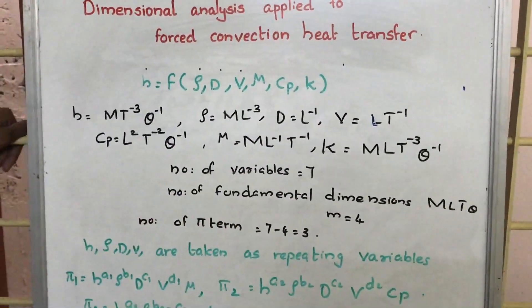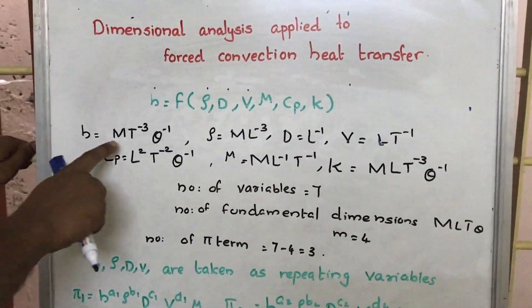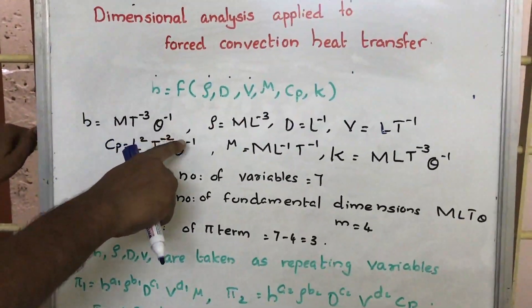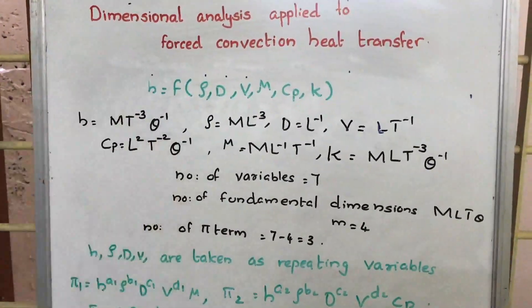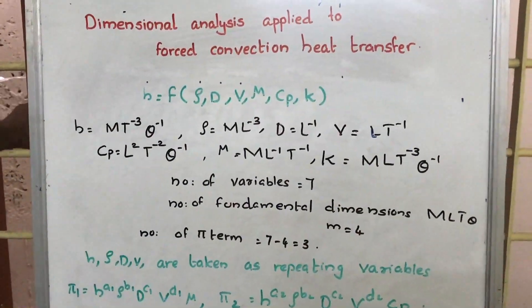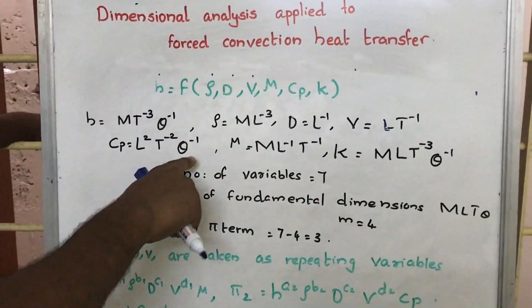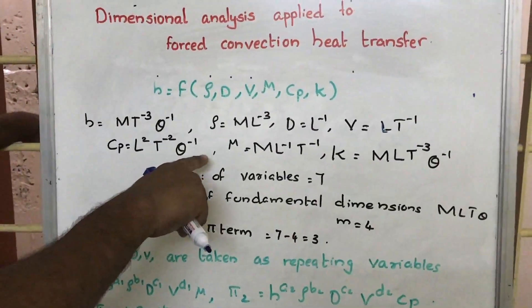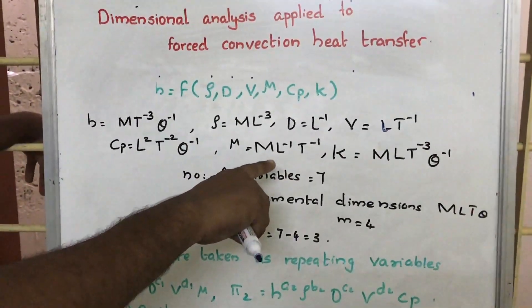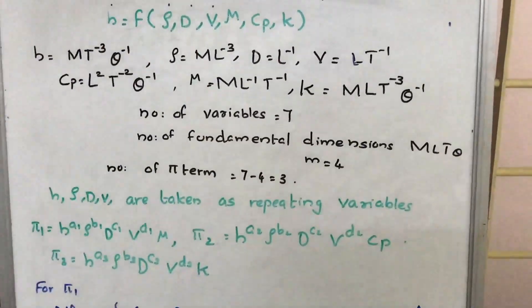First, let us write the basic fundamental dimensions of each variable. H is equal to M T raised to minus 3 theta raised to minus 1. Rho is M L raised to minus 3, D is L, V is L T raised to minus 1, Cp is L squared T raised to minus 2 theta raised to minus 1, mu is M L inverse T inverse, and K is M L T raised to minus 3 theta inverse.